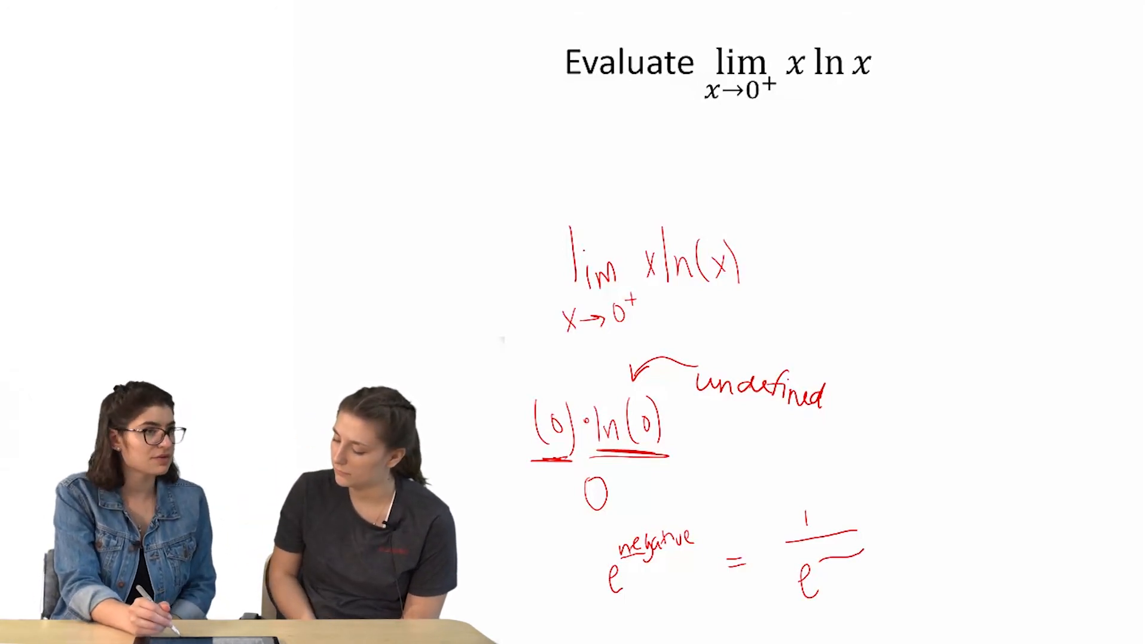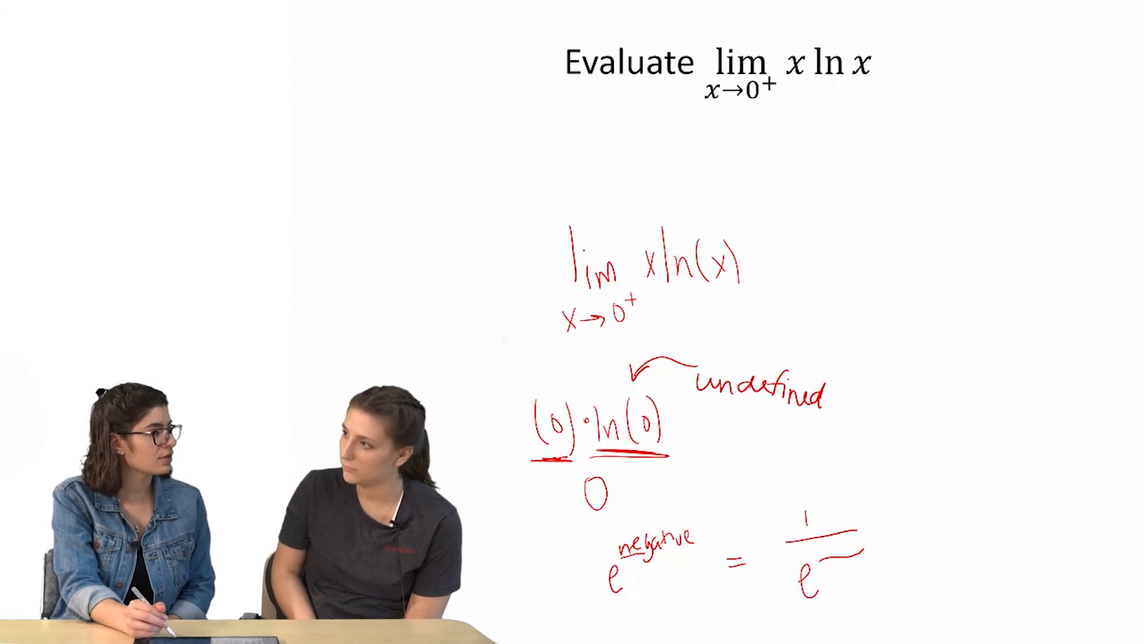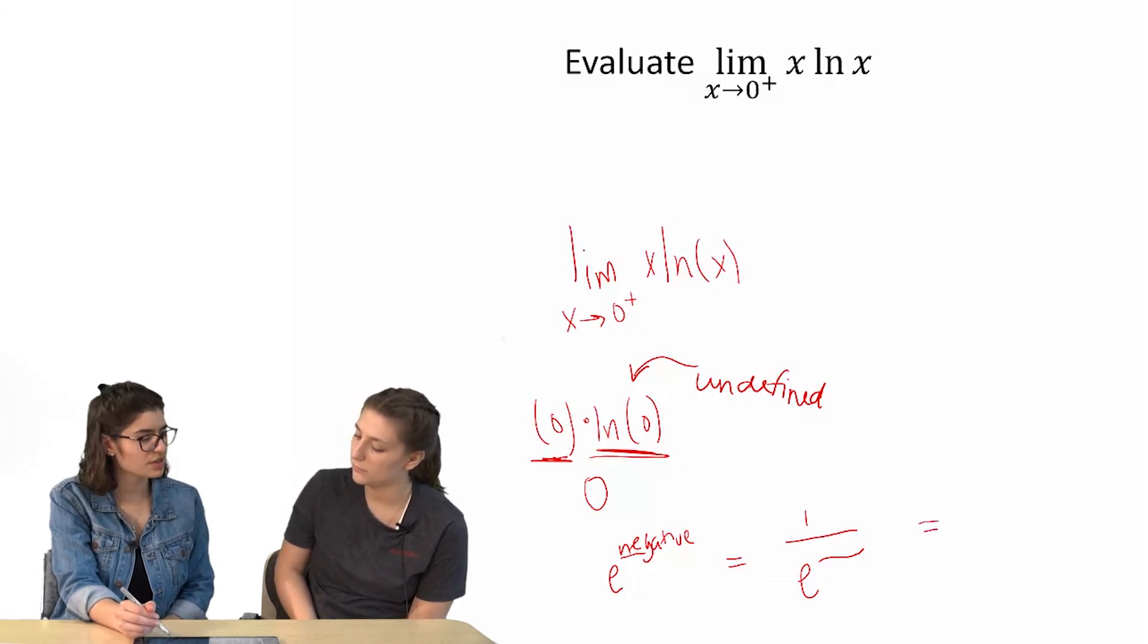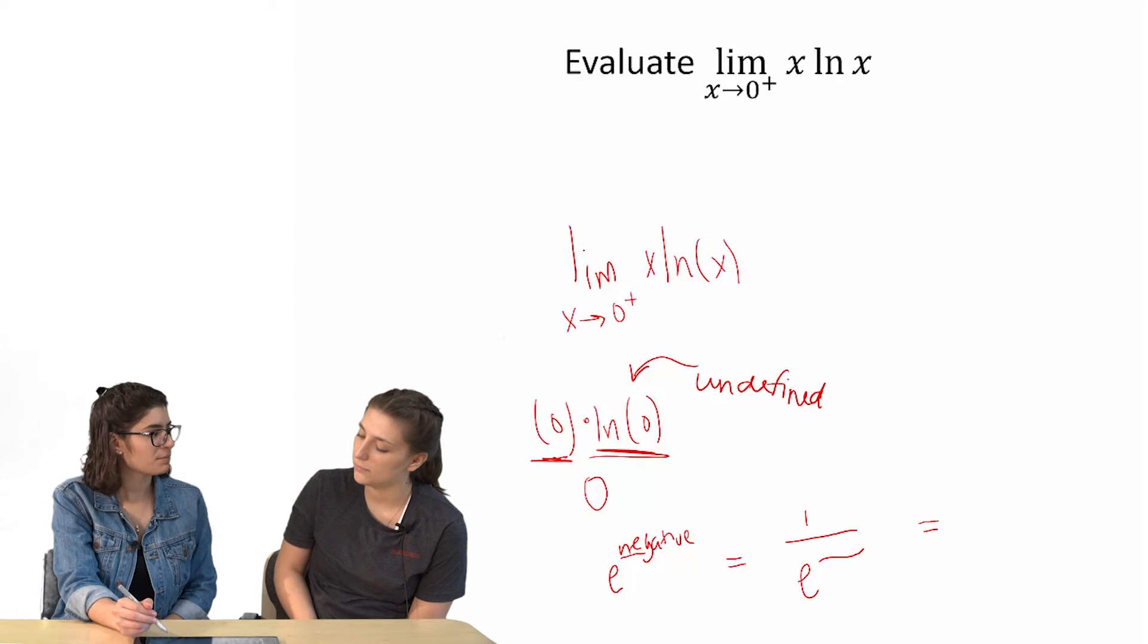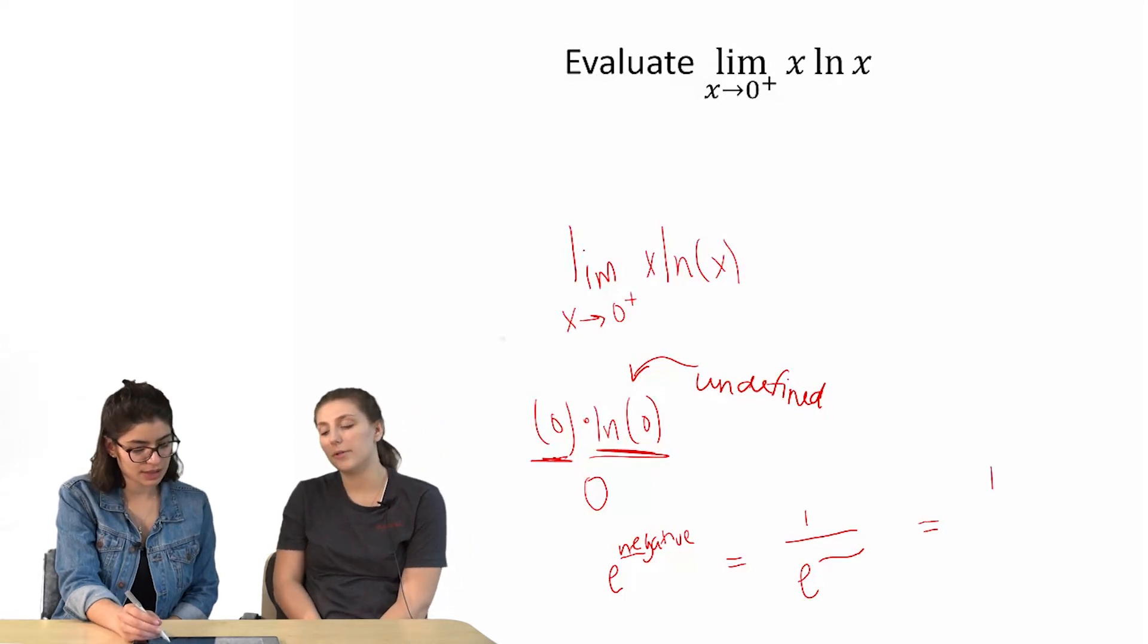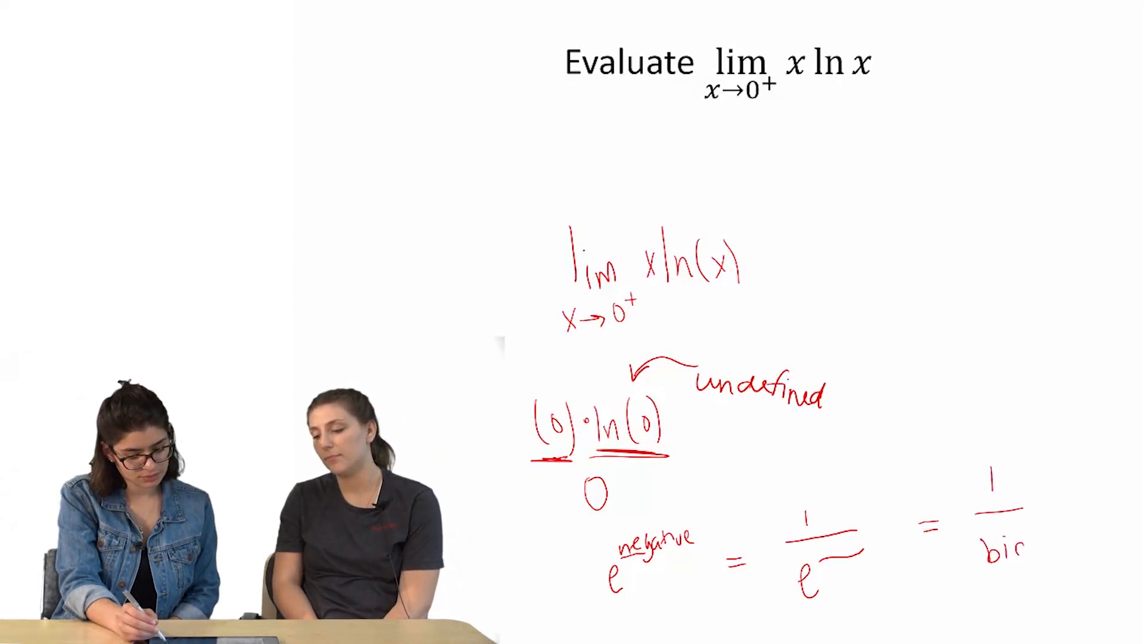And if the denominator is big enough, you'd get almost zero, right? Because you get one over something really big. So it's kind of almost zero.